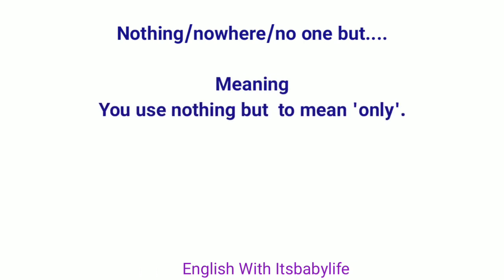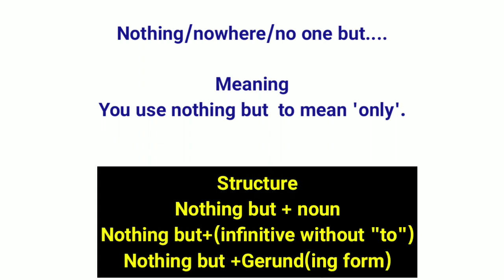In this case, we will use 'nothing' or 'nowhere' for place, or 'no one' for a person. How do we use this? You use 'nothing but' in front to mean 'only.' Use 'nothing but' after a noun, then put an infinitive without 'to' or put a gerund after it.